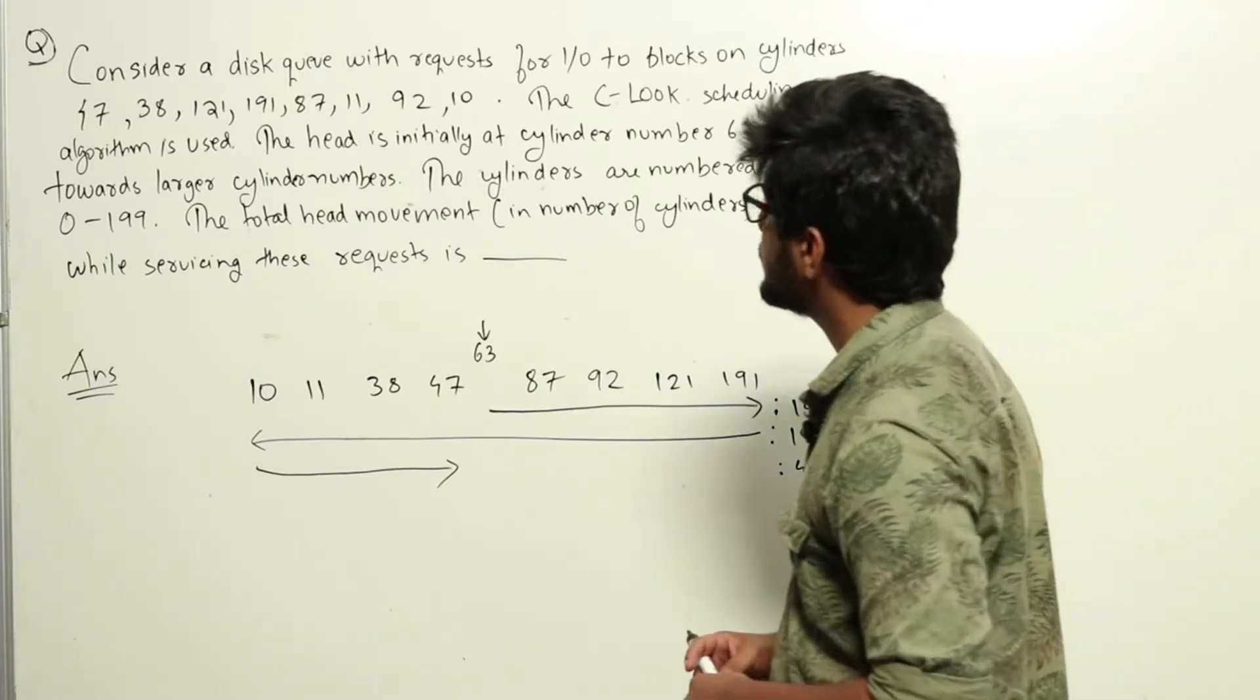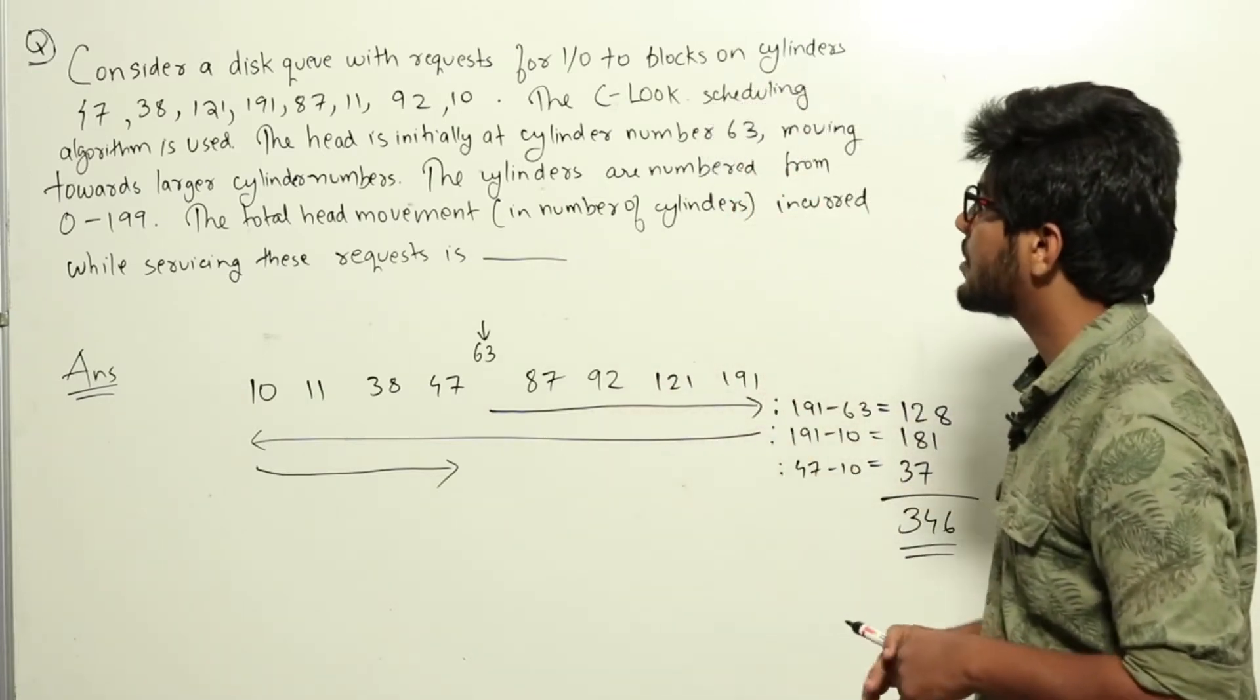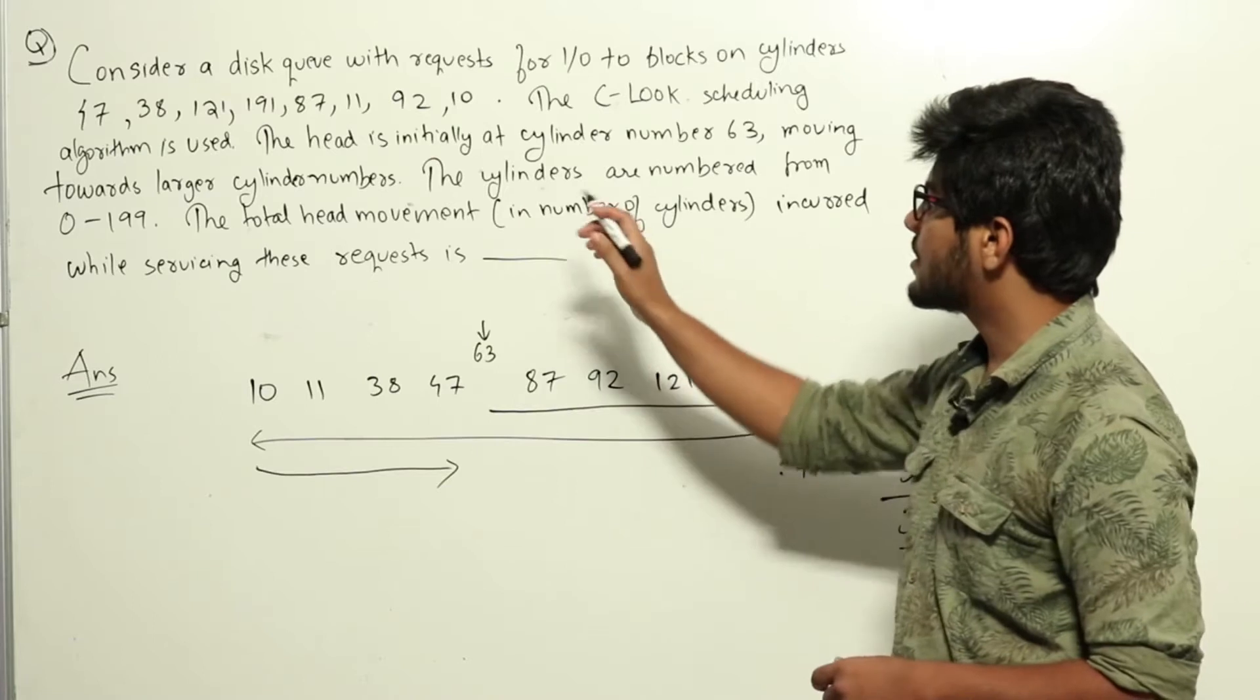The CLUK scheduling algorithm is used. The head is initially at cylinder number 63 moving towards larger cylinder numbers. The cylinders are numbered from 0 to 199.